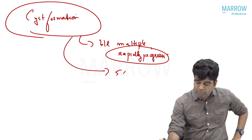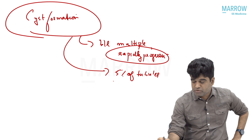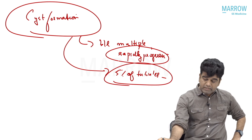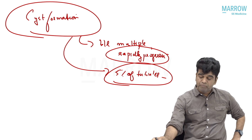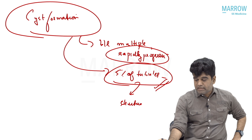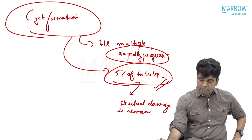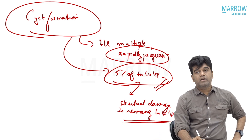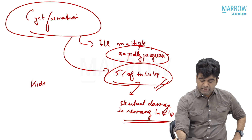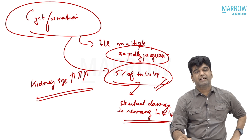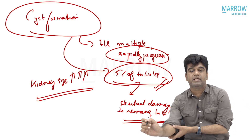The kidney is composed of 85% tubular epithelium, 10% glomerulus, and 5% vascular. Though only 5% of tubules are involved in cyst formation, this causes structural damage to the remaining tubules, mostly by compression. Naturally, kidney size, length, and weight keep on increasing as the cysts grow. This is basically how the cyst increases in size.